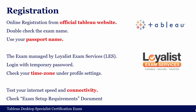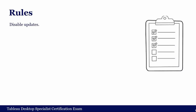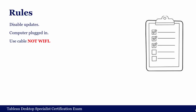Now let's cover the exam rules and exam environment. First, you have to disable automatic software updates for better internet speed — especially Windows users, be careful about that. Your computer must be connected to a power source and to the internet via cable; please do not use a wireless connection as it is risky. You also need Google Chrome because you will connect to the virtual environment through Chrome. In the exam, you can use only one computer screen.